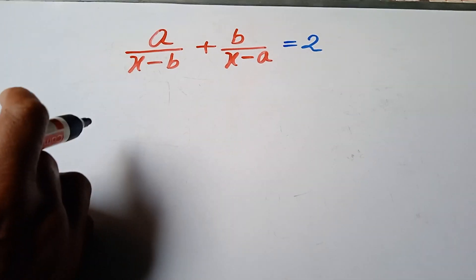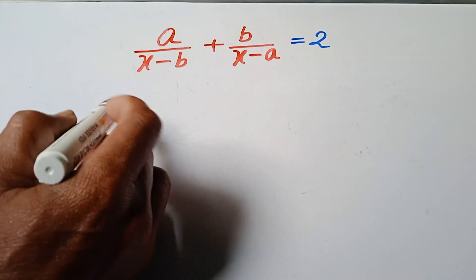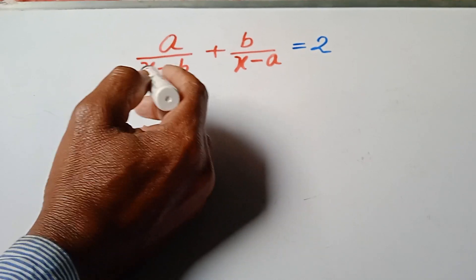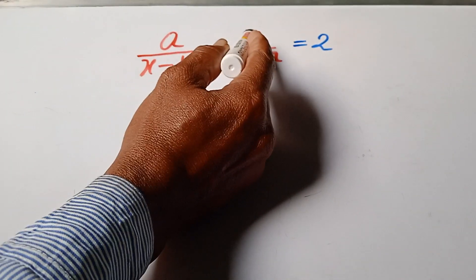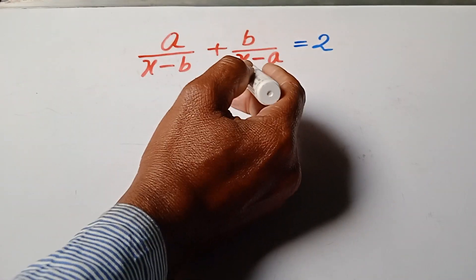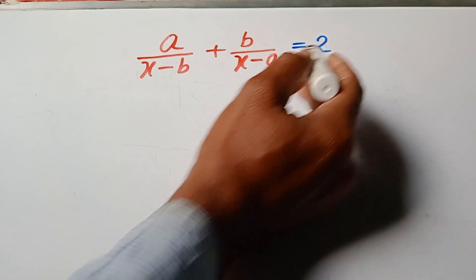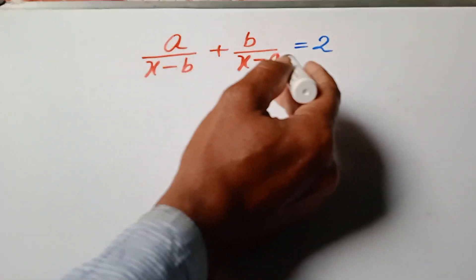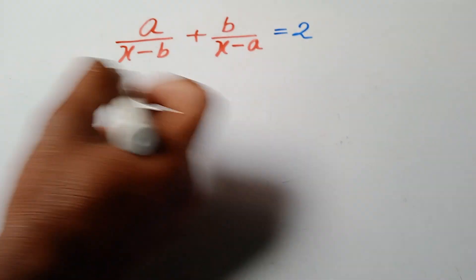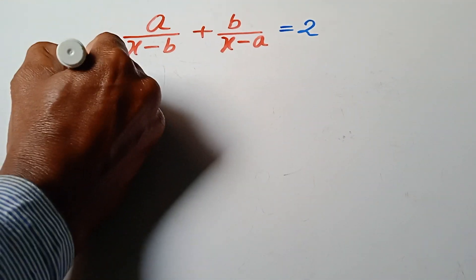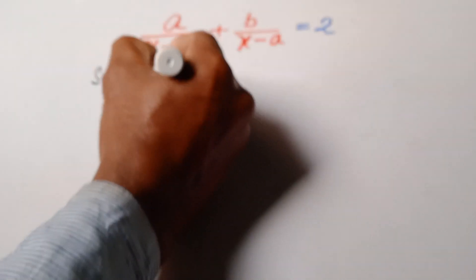A simple algebraic problem. Given: a over x minus b plus b over x minus a is equal to 2. Find the value of x. At first, we set up the solution.